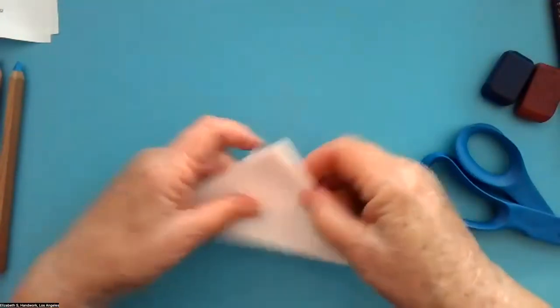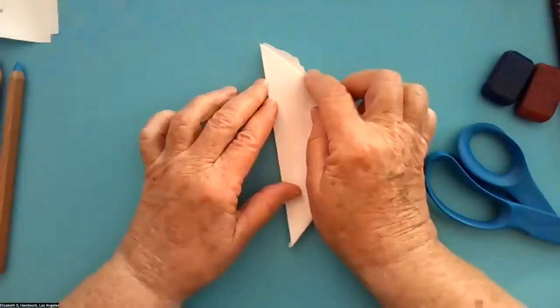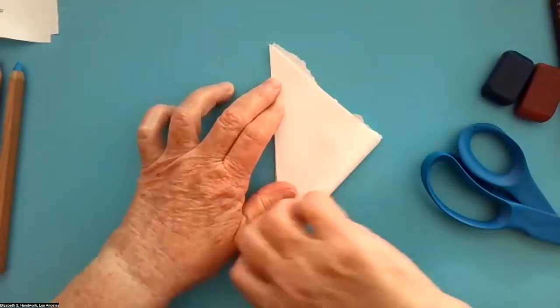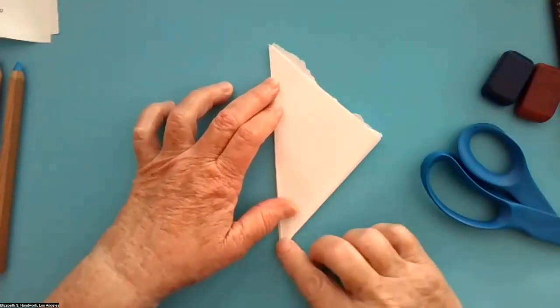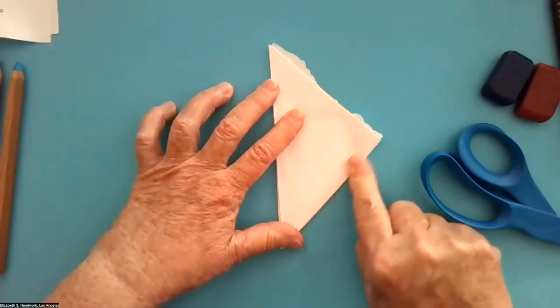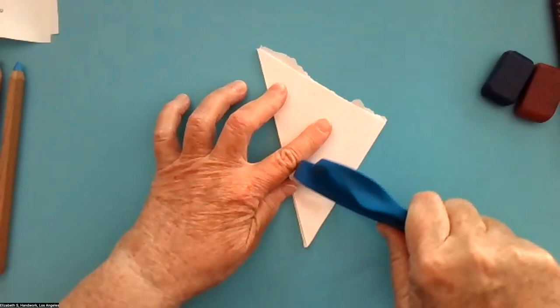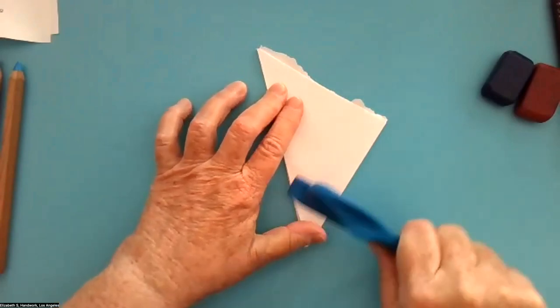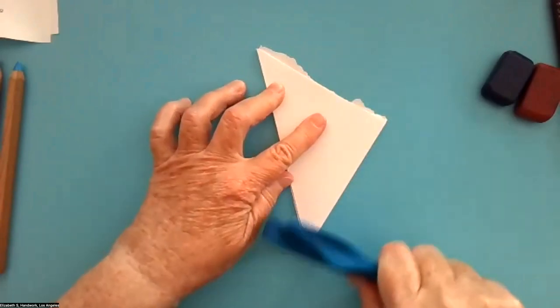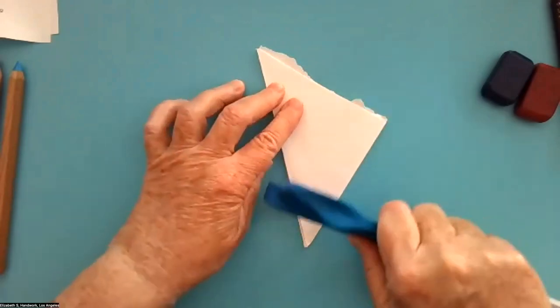I'm going to fold this in the opposite direction. I'm going to line up the edges. Check the point is a point-ish because it's about eight thicknesses. Finger press and then press with something hard from the inside out.